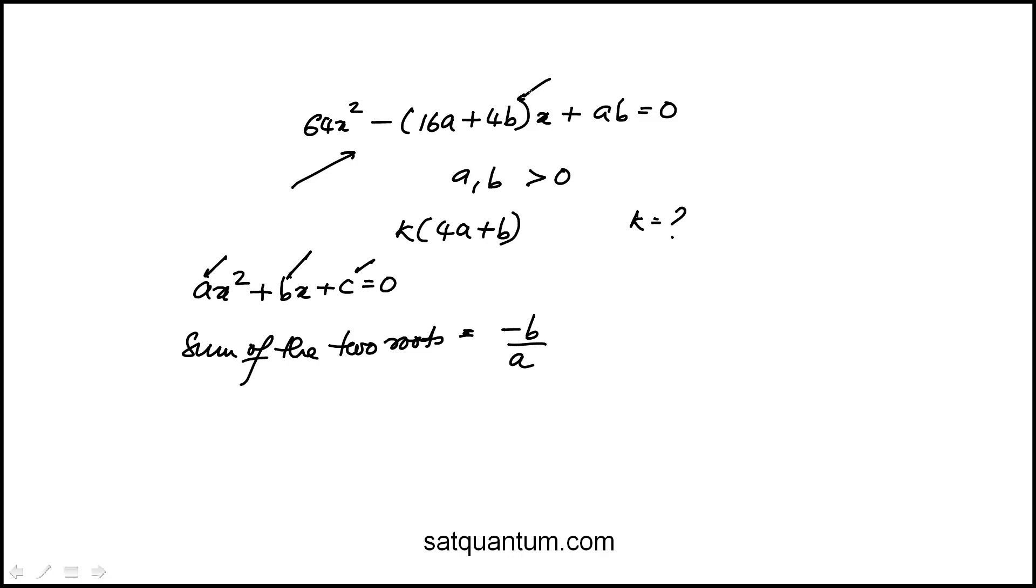So here, the coefficient of x term is this, minus 16a plus 4b, and then a here is the coefficient of x squared divided by 64. This is the sum of the two solutions. We're given that that's equal to k times 4a plus b.